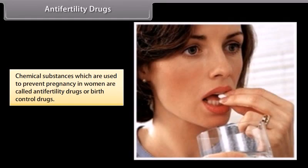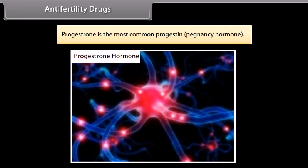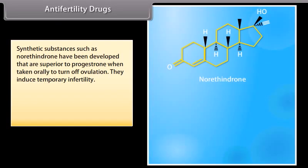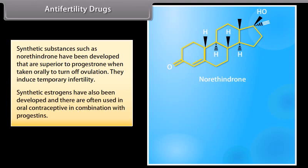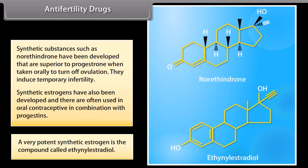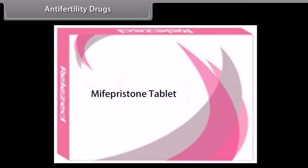Anti-fertility drugs: chemical substances which are used to prevent pregnancy in women are called anti-fertility drugs or birth control drugs. Progesterone is the most common progestin. Synthetic substances such as norethindrone have been developed that are superior to progesterone when taken orally to turn off ovulation; they induce temporary infertility. Synthetic estrogens have also been developed and are often used in oral contraceptives in combination with progestins. Mifepristone is a synthetic steroid that blocks the effects of progesterone and is used as a morning-after pill in many countries.